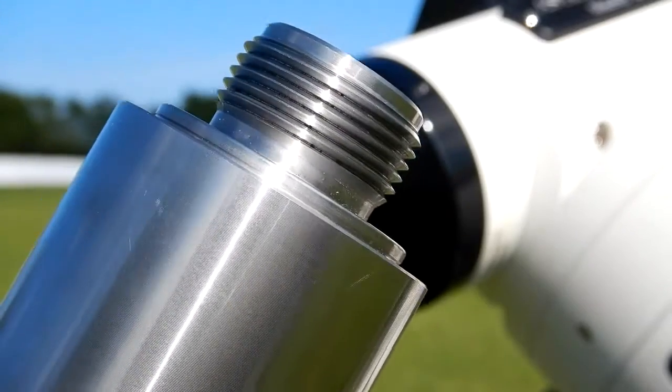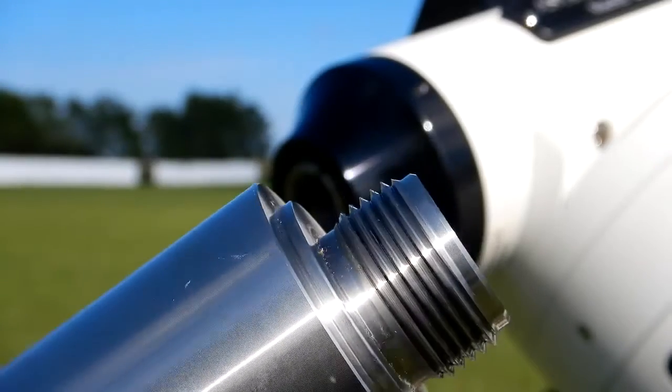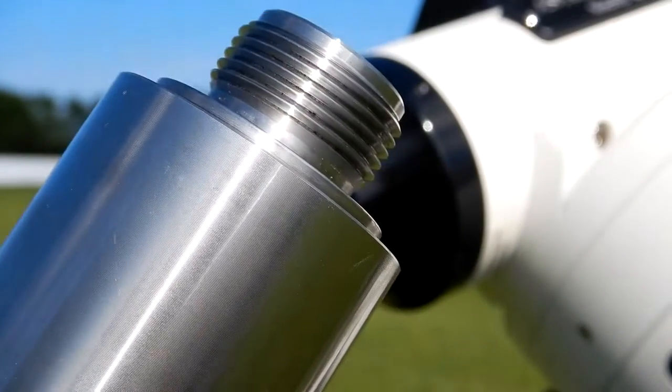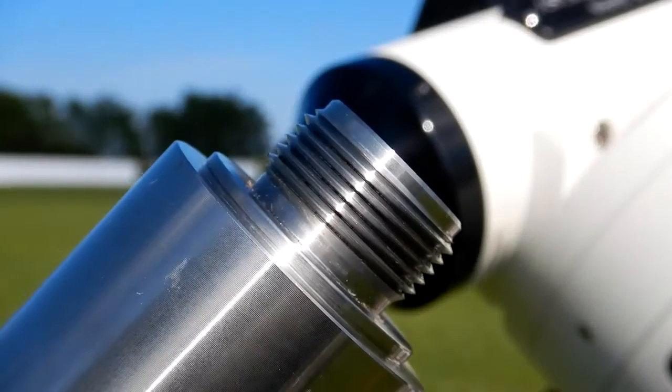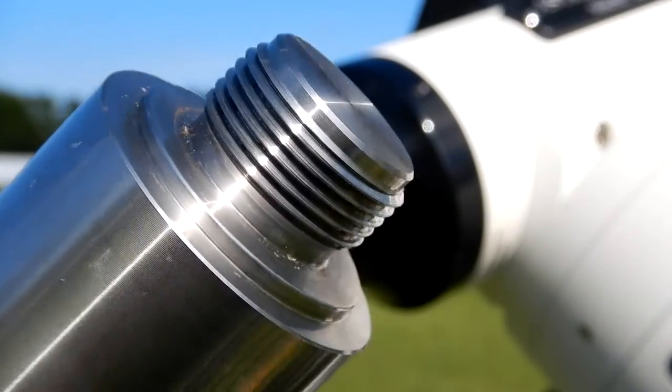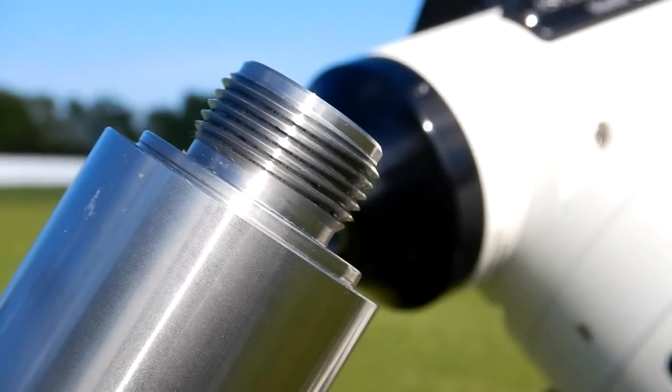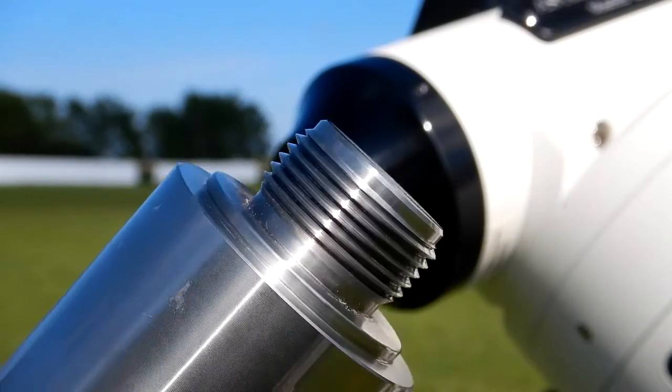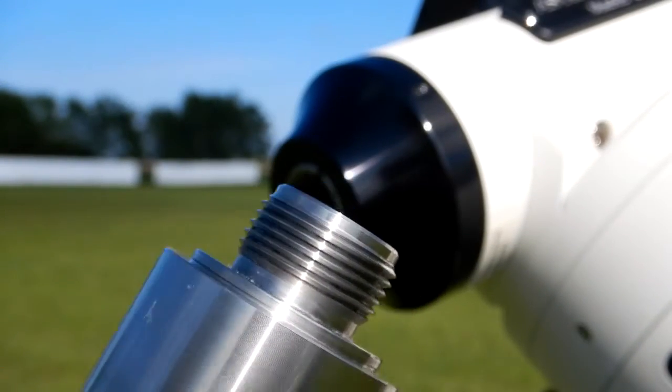With any of my counterweight shafts, I always check the threads and wipe them off if there's any kind of grit or anything on them. Here you can see what this looks like. I use furniture polish and wipe them down with it.